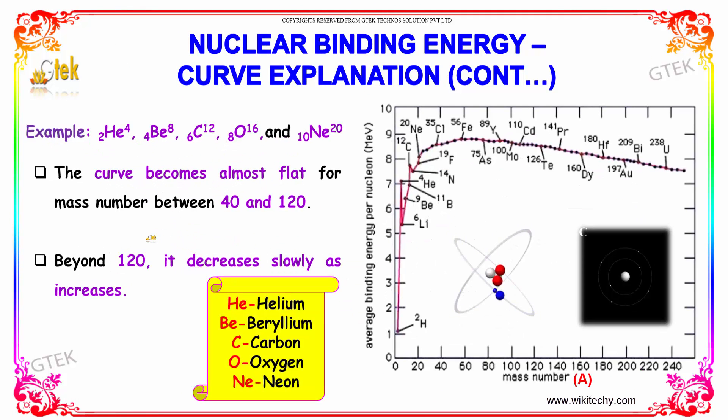For typical examples: helium we got a peak here, beryllium here, carbon here, oxygen to the next level and neon to the next level.